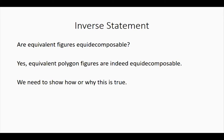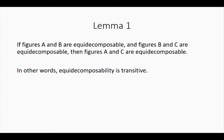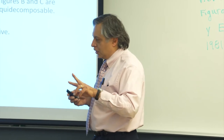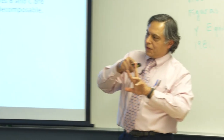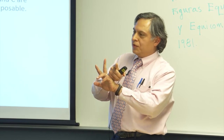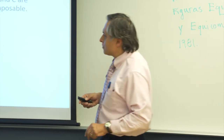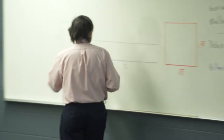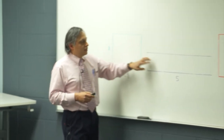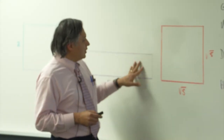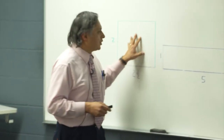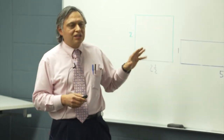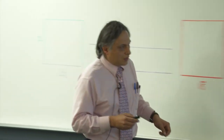We need five lemmas before we can finish proving this. The first lemma is that if two figures are equi-decomposable, and the second figure is equi-decomposable to a third figure, then the first one is equi-decomposable to the third figure — transitivity. For instance, if we know how to cut this to make that, and we find a way to cut that into a third figure, then we can certainly go from the first to the third.